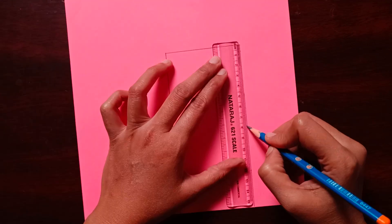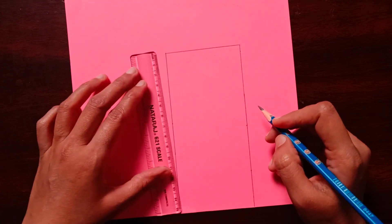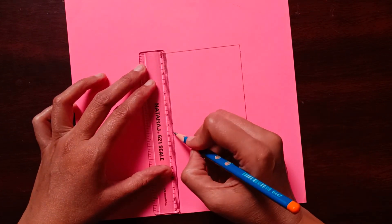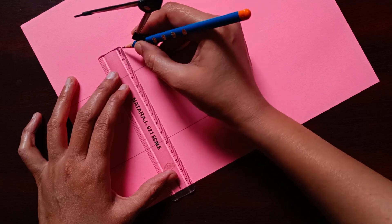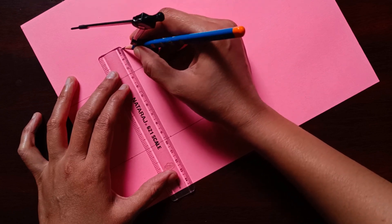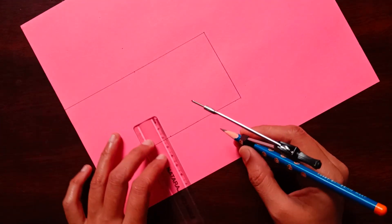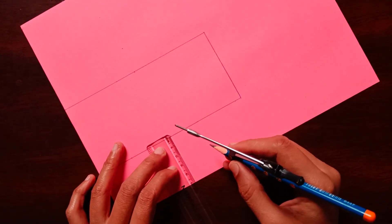We will take half of the 15.7 cm, so we will take 7.8 cm. 2.5 cm. We mark here at 2.5 cm. Here also we will mark 2.5 cm.